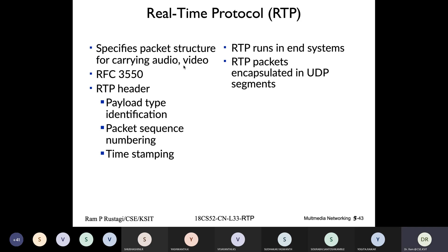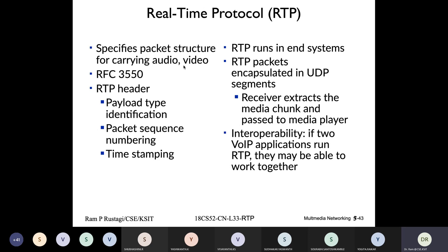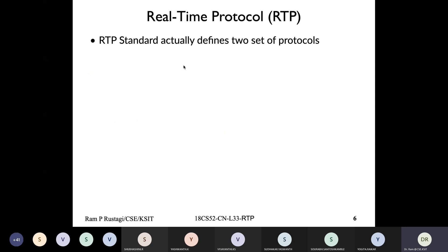RTP needs to run in end systems — intermediate network routers don't need to worry about what protocol is being used. Intermediate routers only look at the IP packet for routing; they don't even care whether it's UDP or whether RTP is running on top of UDP. So RTP is an end-to-end protocol that runs only in end systems. When a packet is received, the headers are extracted and the data is given to the application for playback. We already talked about interoperability being needed for this to work.